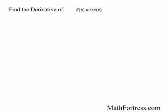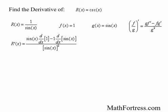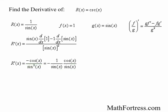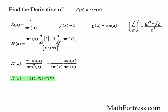Let's find the derivative of cosecant of x. Since the reciprocal of sine is cosecant, we rewrite this as r(x) = 1 over sin(x), letting f(x) = 1 and g(x) = sin(x). Using the quotient rule, the derivative of r(x) equals sine of x times the derivative of 1, minus 1 times the derivative of sine of x, all over sine squared of x. Simplifying, we break up the denominator to get negative times (1/sin(x)) times (cos(x)/sin(x)). Since 1/sin(x) is cosecant and cosine/sine is cotangent, the derivative of cosecant equals negative cosecant times cotangent of x.